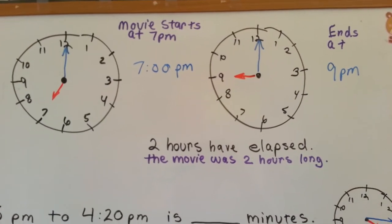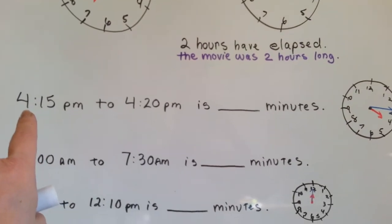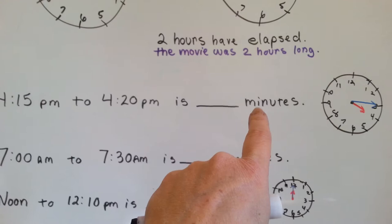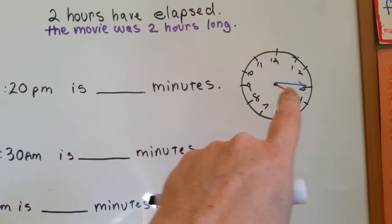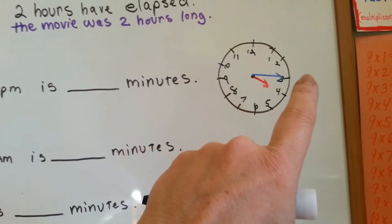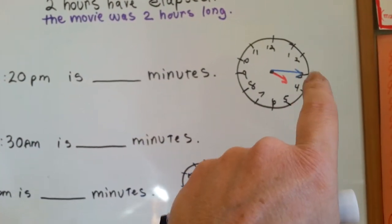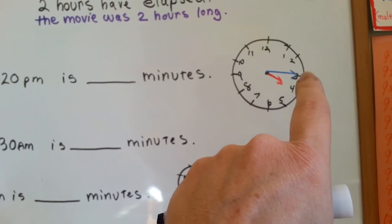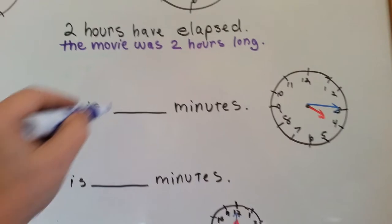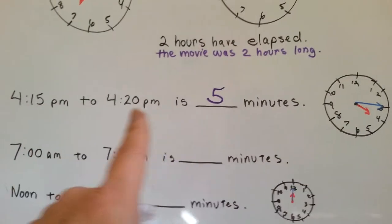All right, so let's look at this one. At 4:15 p.m. to 4:20 p.m. is how many minutes? Here's 4:15. Remember, you count by fives. 5, 10, 15. If it goes to 4:20, how many minutes is in between the 3 and the 4? 5. Five minutes have elapsed. See? From 4:15 to 4:20.